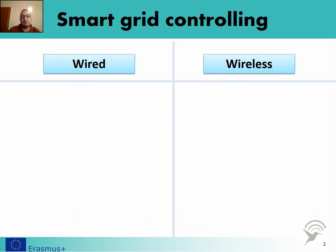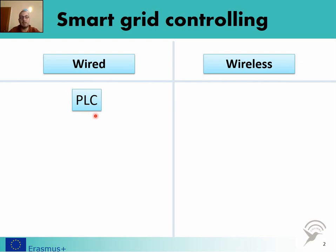For the smart grid controlling, we can use both methods — either wired or wireless. For the wired method, we use the PLC standard. PLC is an abbreviation for Power Line Communication, and it was developed a really long time ago, back in the 19th century. Right now it has been reused.